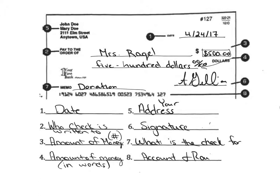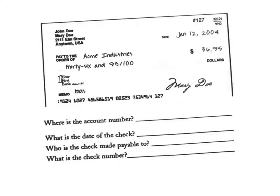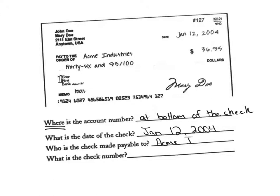Number eight is your account number and actually the routing number, but we're not going to get too detailed into that. The first practice question asks where is the account number — it is always at the bottom of your check. The date of the check is January 12, 2004. The check is made payable to Acme Industries. And the check number is 127.